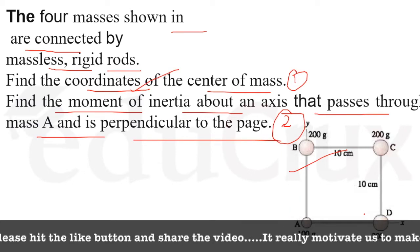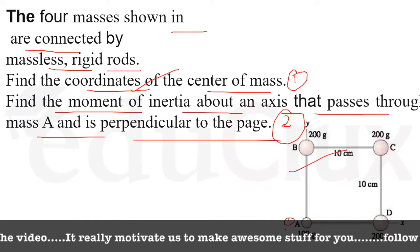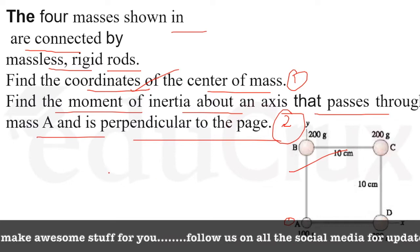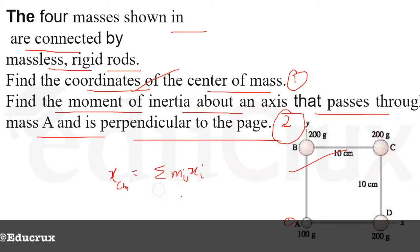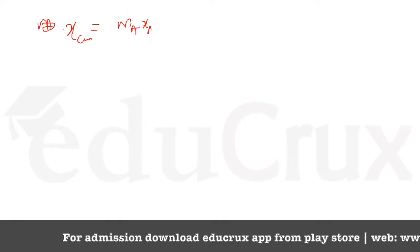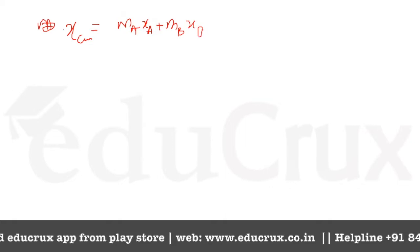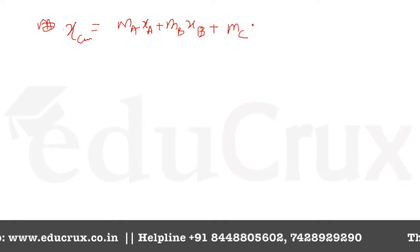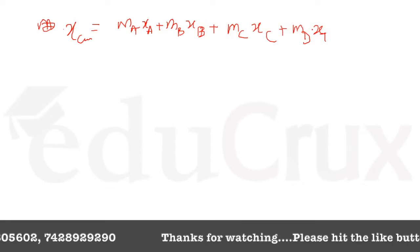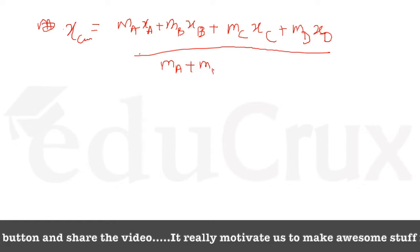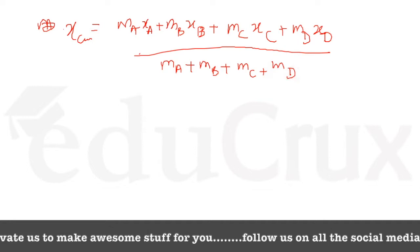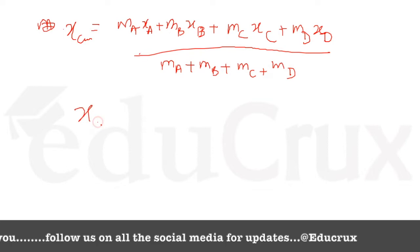Let's calculate the first part: find the coordinates of the center of mass. If this is the y-axis and this is the x-axis, then this is the origin — our reference point. We know that x_cm for four particles is the summation of m_i * x_i divided by the summation of m_i.